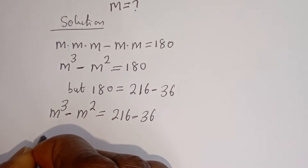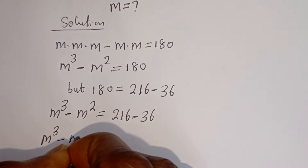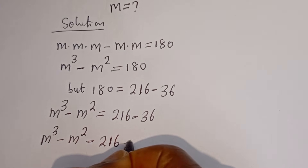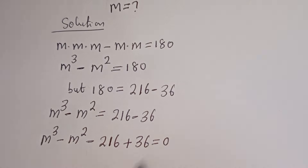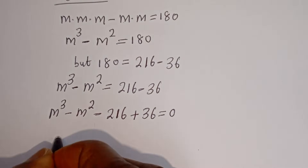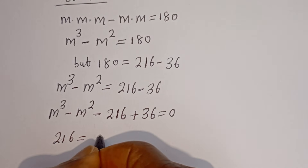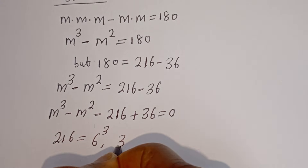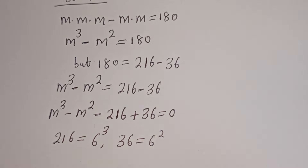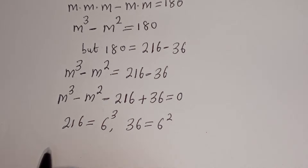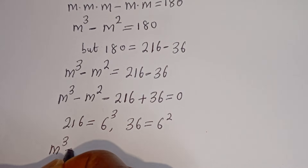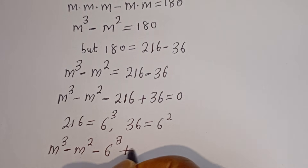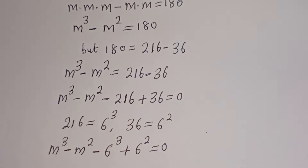And here we have M to the power of 3 minus M squared, minus 216 plus 36, is equal to 0. Then 216 is equal to 6 to the power of 3, and 36 is equal to 6 squared. So we have M to the power of 3 minus M squared minus 6 to the power of 3 plus 6 squared is equal to 0.